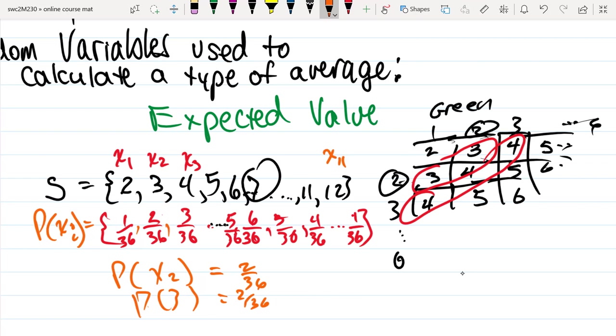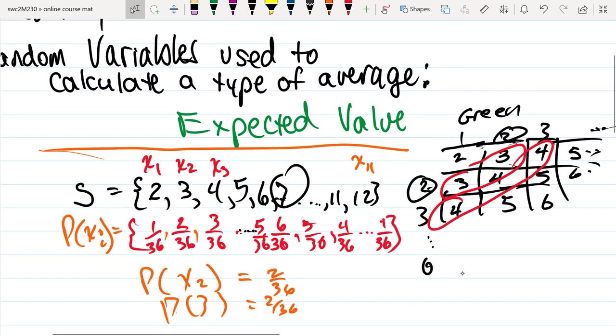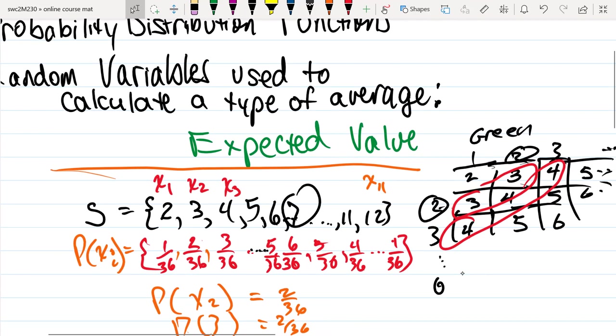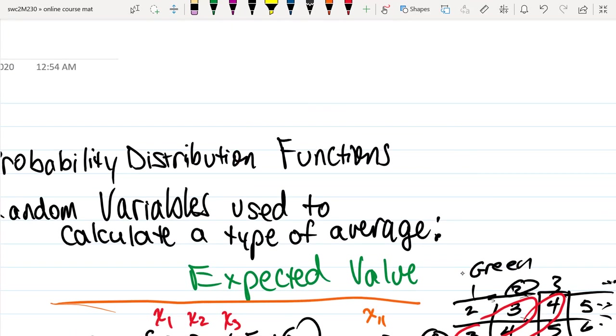It's these two sets: it's the random variables and then it's the probability associated with each one of those random variables. So that's where we start. Now we haven't talked about how we get averages or anything else, but I'll save that for the next discussion. But that's just an introduction to a probability distribution function.